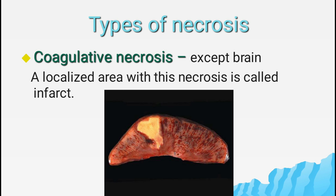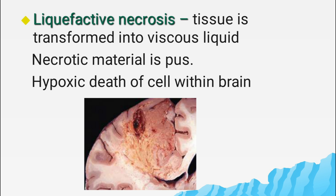The first type is coagulative necrosis, which can occur in all organs except the brain. A localized area of coagulative necrosis is called an infarct. In this type, the architecture of the dead tissue is preserved for at least some days and the affected tissue has a firm texture. Here is a wedge-shaped kidney showing an infarct in yellow color.